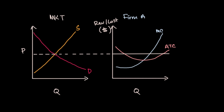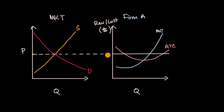Let's dig a little bit deeper into what happens in perfectly competitive markets in the long run. On the left-hand side we have our supply and demand curves for our perfectly competitive market, with the equilibrium price marked by a dotted line. The firms in that perfectly competitive market are just price takers, so the market price is going to be their marginal revenue curve — a horizontal curve.